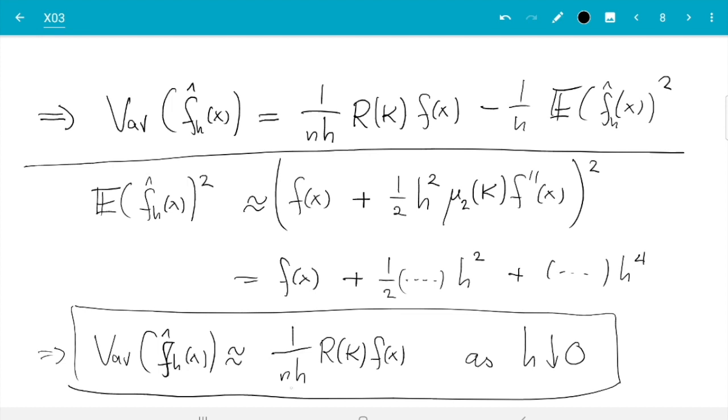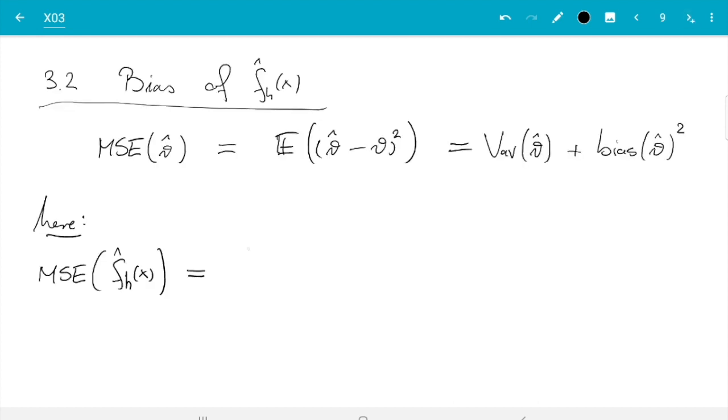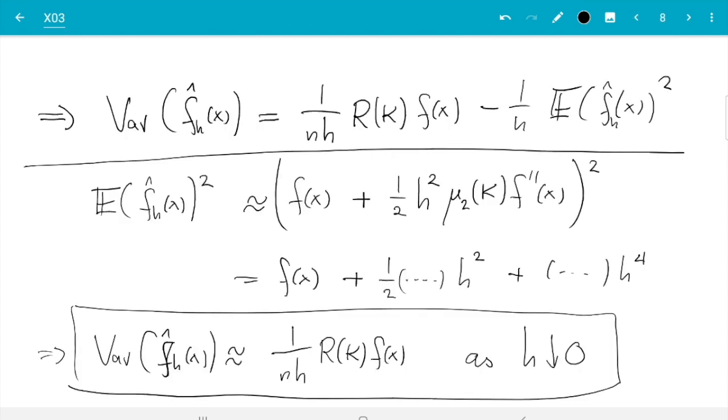The variance is 1 over nh roughness times f of x, so 1 over nh roughness of k, f of little x.